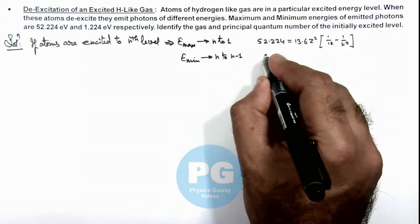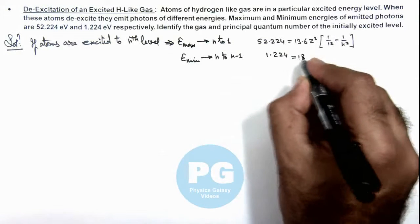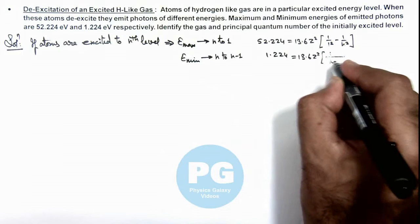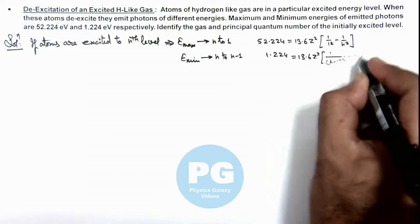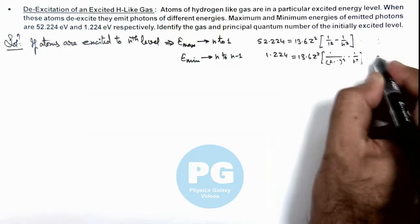And for the minimum energy emitted, this is given as 1.224, which can be written as 13.6 z² multiplied by 1/(n-1)² minus 1/n². If these equations are equations 1 and 2.